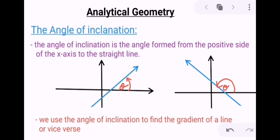One very new and fun part to learn in analytical geometry is the angle of inclination, so let me teach you quickly about this. The angle of inclination is the angle formed from the positive side of the x-axis to the straight line, as shown in these diagrams below.